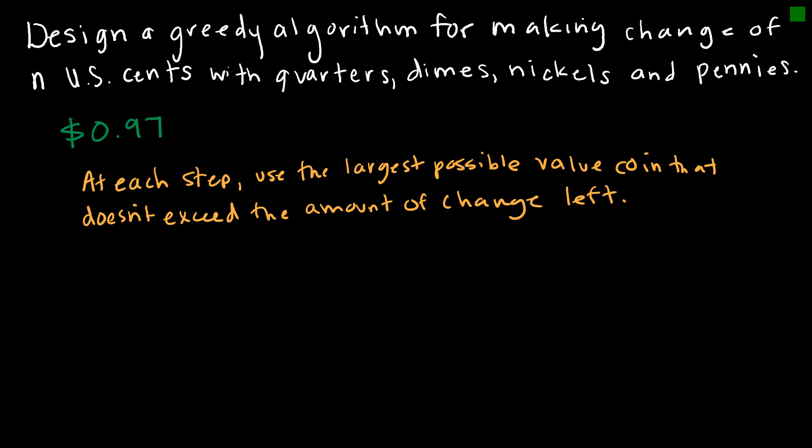So in my 97 cents example, I'm starting with 97 cents, and on step one, I would give you a quarter. I'm going to give you a quarter, and that means how much do you have left? You have 25 cents less than that, which is now 72 cents.